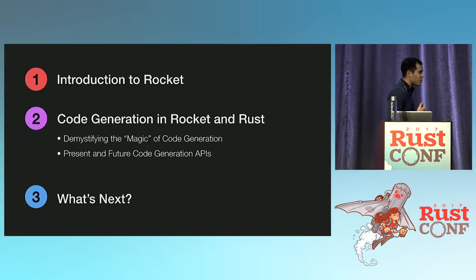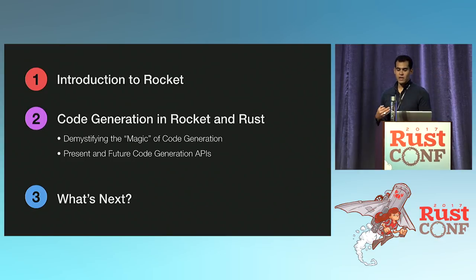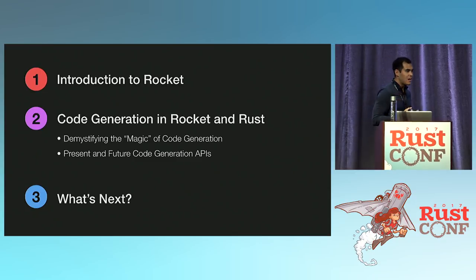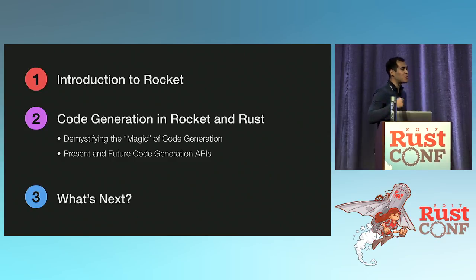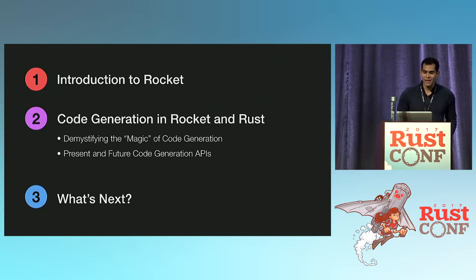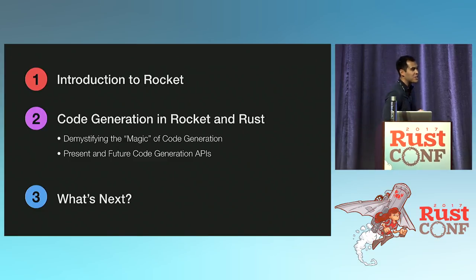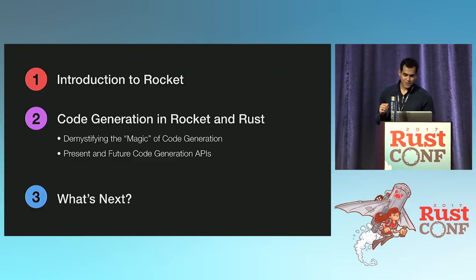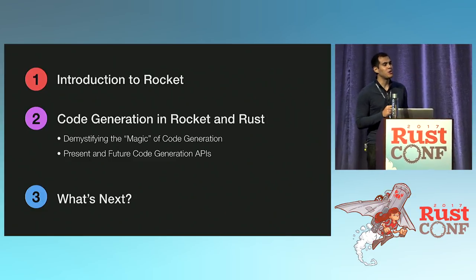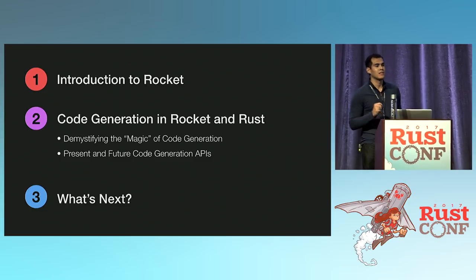After you get to know a little bit about how Rocket code looks and what Rocket does, I want to talk about code generation in Rocket and in Rust. When Rocket was launched, there was a pervasive comment about how Rocket was so magical — how Rocket was like Rails and it's magic, avoid it like the plague because it's too much magic. I want to demystify that.